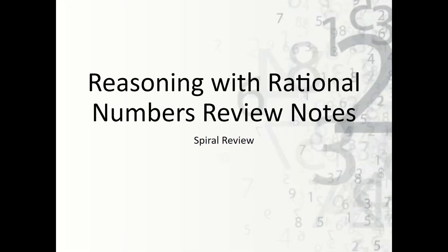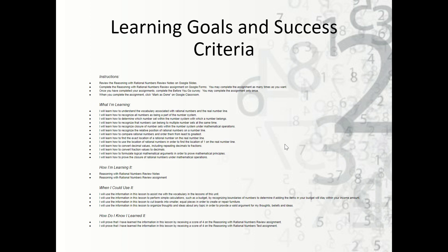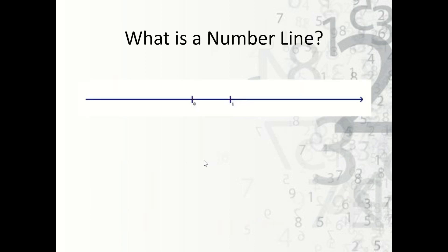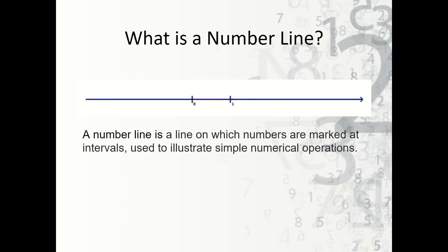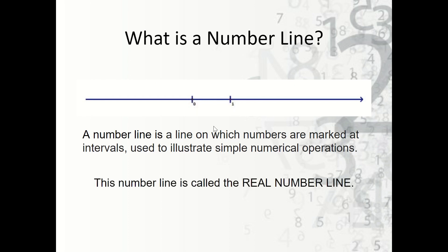Let's take a look at the reasoning with rational numbers review notes. Our notes begin with the learning goals and success criteria. First of all, what is a number line? A number line is a line on which numbers are marked at intervals used to illustrate simple numerical operations. For instance, here's zero, here's one. This number line in particular is called the real number line because it represents all the real numbers.